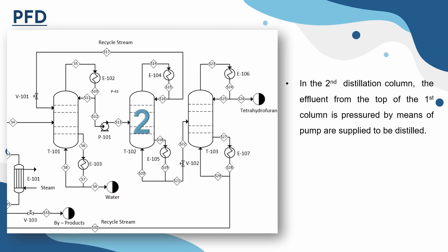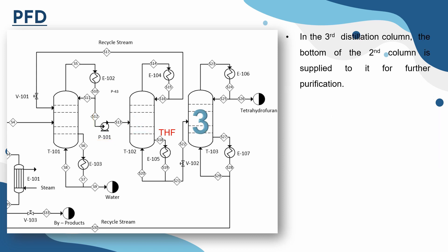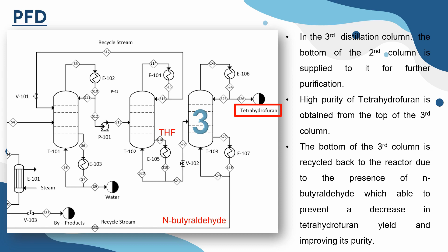In the second distillation column, the effluent from the top of the first column is pressured by means of pump and supplied to be distilled. Tetrahydrofuran is obtained from the bottom of the column. In the third distillation column, the bottom of the second column is supplied to it for further purification. High purity of tetrahydrofuran is obtained from the top of the third column. The bottom of the third column is then recycled back to the reactor due to the presence of N-butyraldehyde, which is able to prevent a decrease in tetrahydrofuran yield and improve its purity.